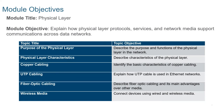For the module objective, at the end of this video lecture, you should be able to explain how physical layer protocols, services, and network media support communications across data networks. Subtopics included in this video lecture are: the purpose of the physical layer, the physical layer characteristics, copper cabling, UTP cabling, fiber optic cabling, and wireless media.